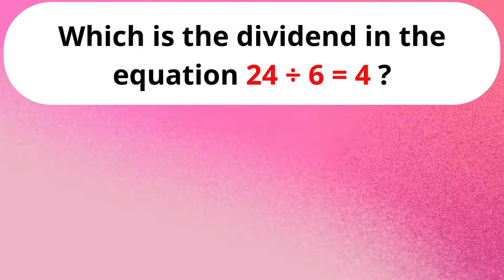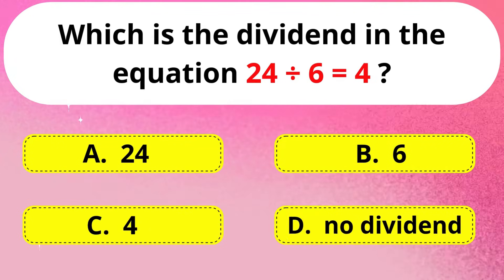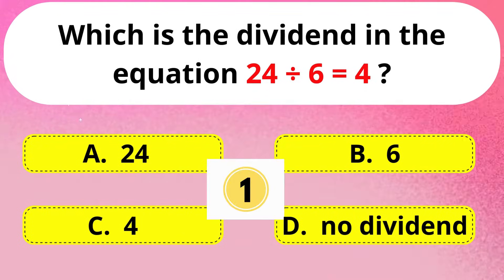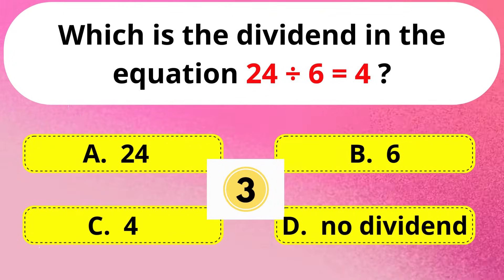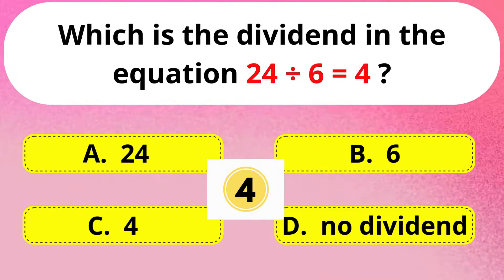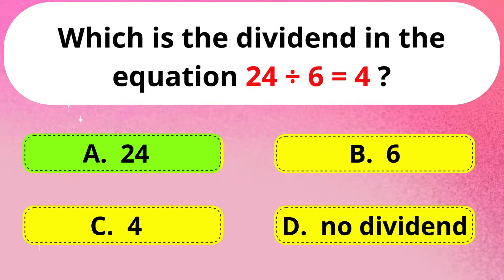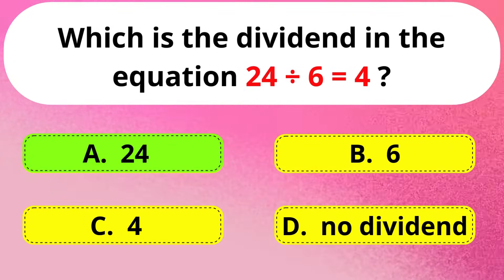Next question. Which is the dividend in the equation? 24 divided by 6 is equal to 4. Answer is Option A: 24.